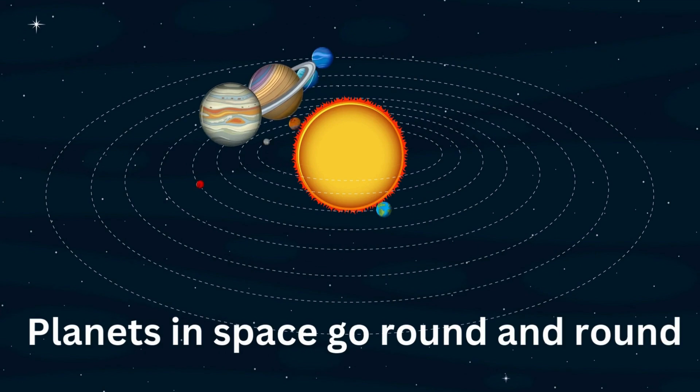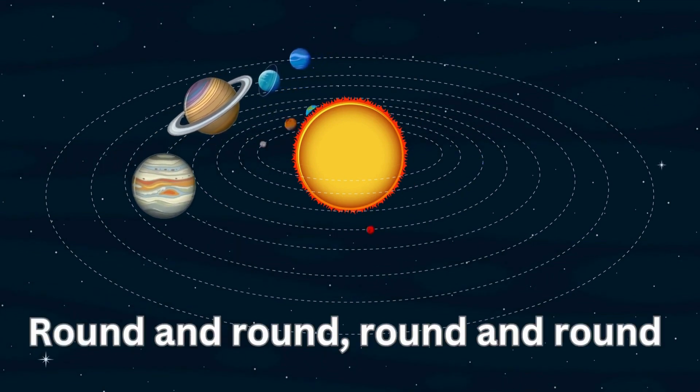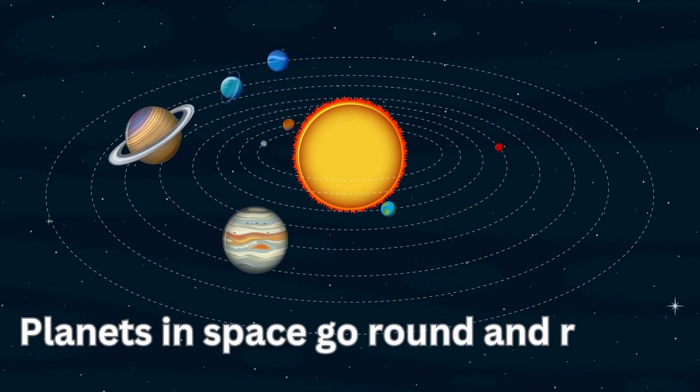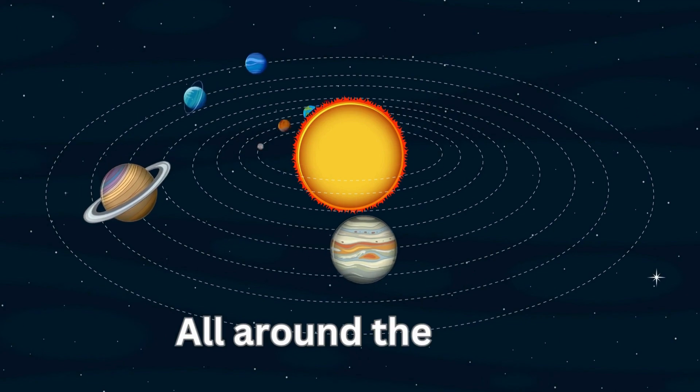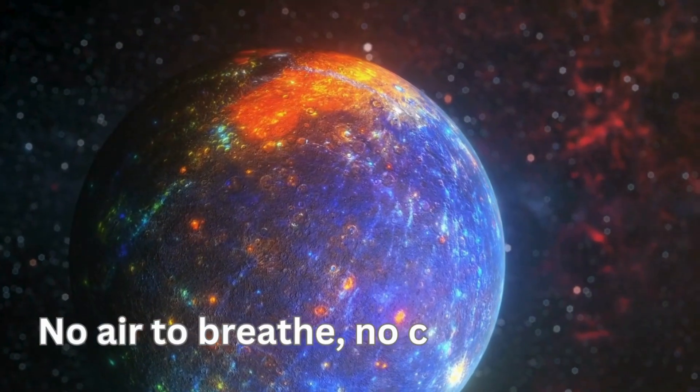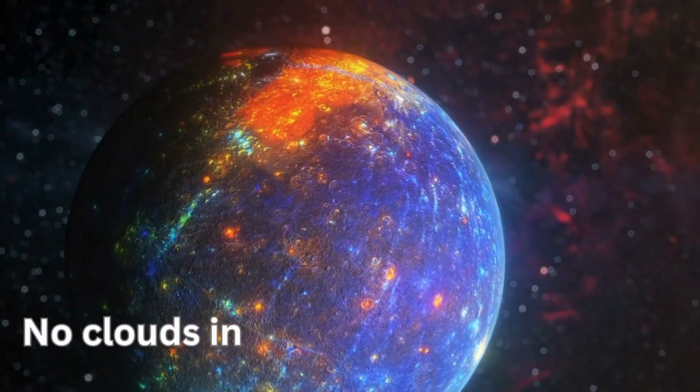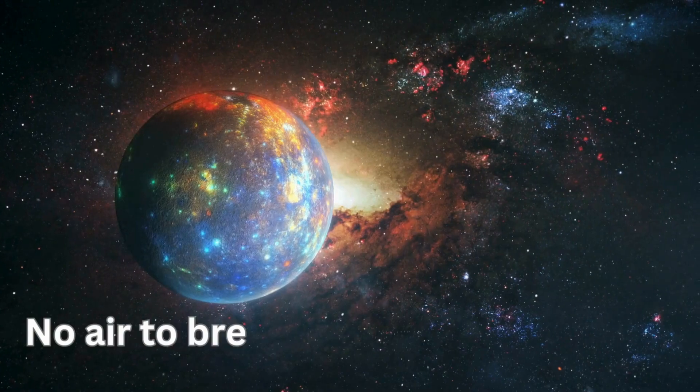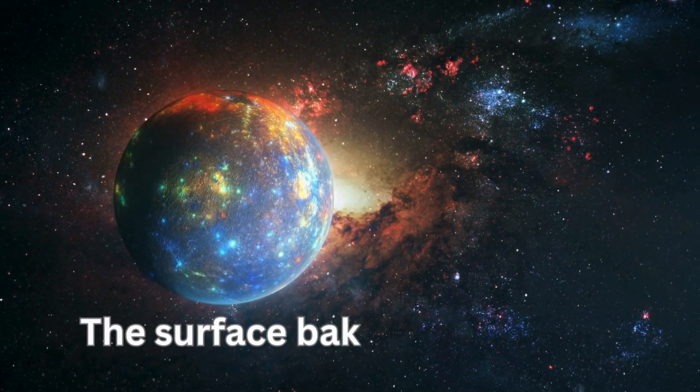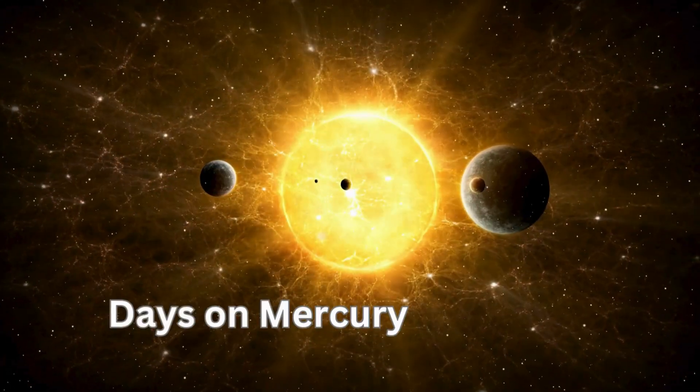Planets go round and round, round and round, all around the sun. No air to breathe, no clouds in sight. The surface baked by light.